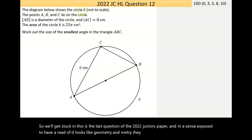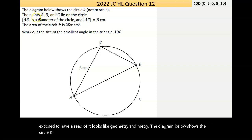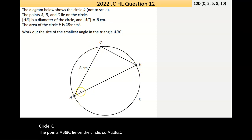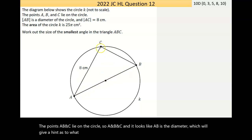The diagram below shows the circle K. The points A, B, and C lie on the circle. So A and B and C, and it looks like AB is the diameter, which should give a hint as to what is going on up here.